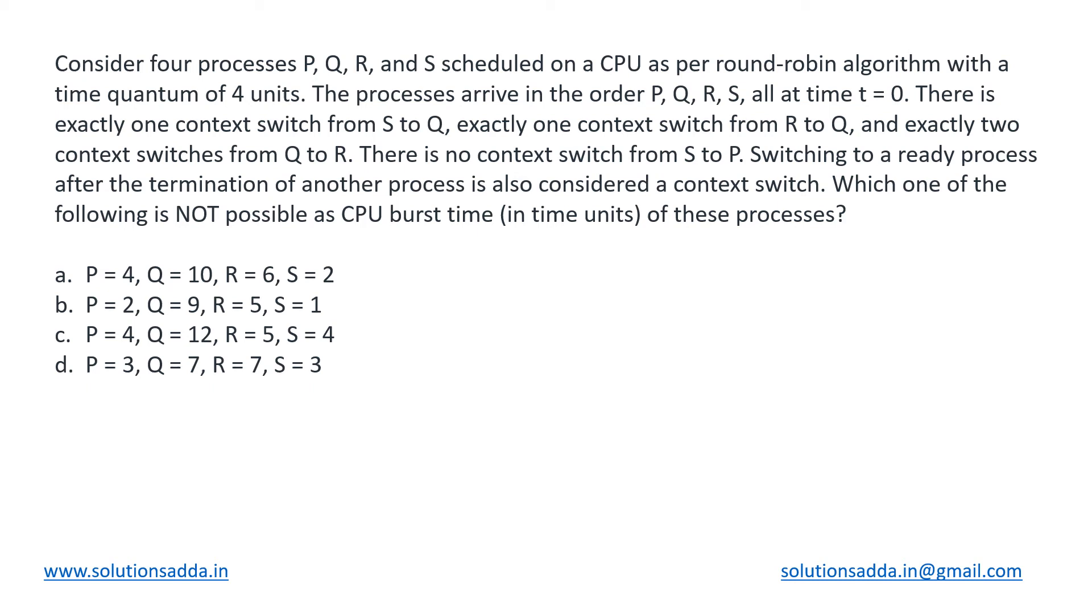This is an operating systems question based upon process scheduling. We have been given four processes P, Q, R, and S which are all scheduled in the CPU using round-robin algorithm. The time quantum used is 4 units and these processes have arrived in the same order P, Q, R, and S.